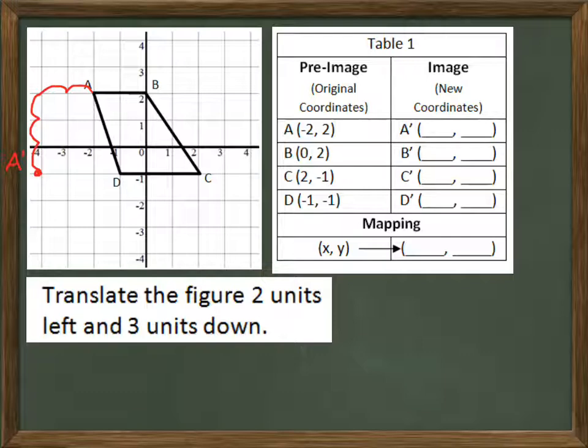So I have moved the coordinate for A, two units left and three units down. That forms the coordinate A prime. That's how I say that thing there. The little apostrophe is a prime. So that point, you say that as A prime. I can draw the other coordinates in on there by moving them two left and three down. There's B prime, C prime, and D prime.